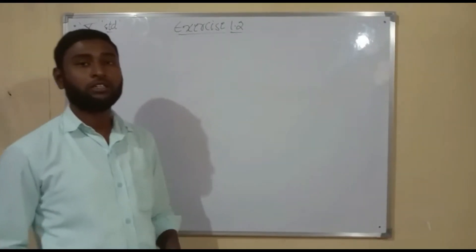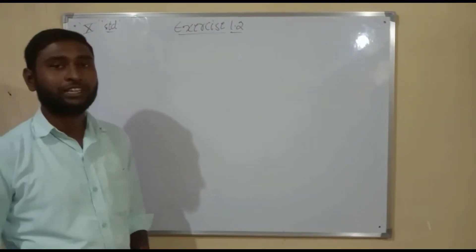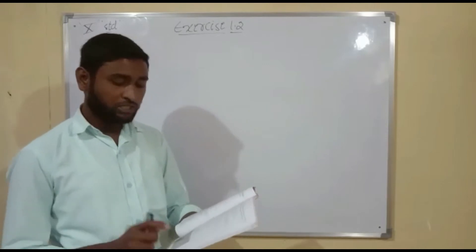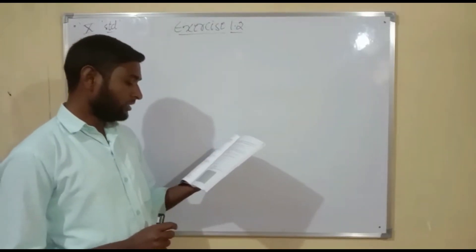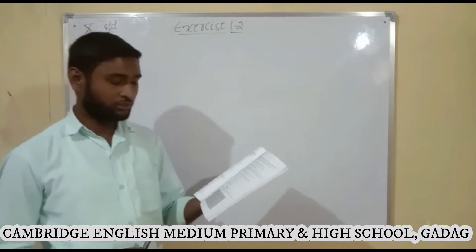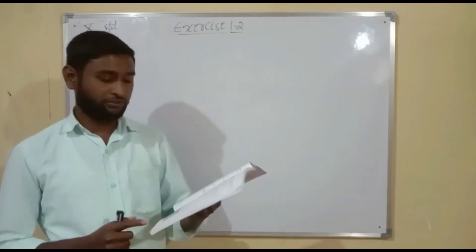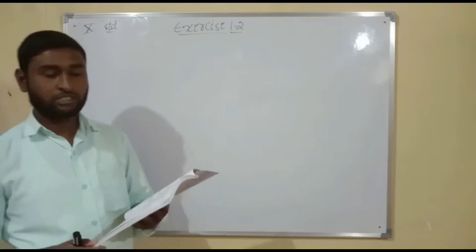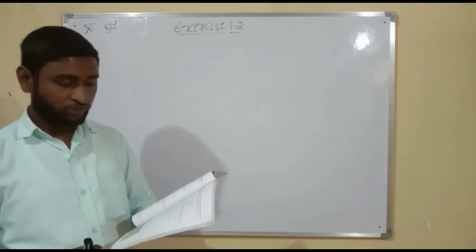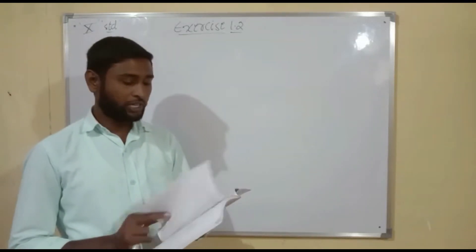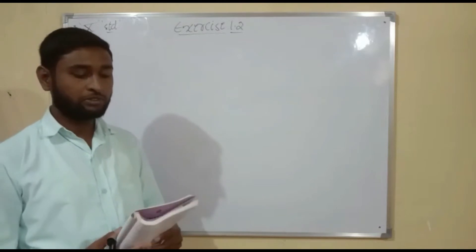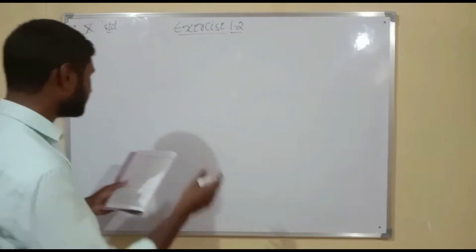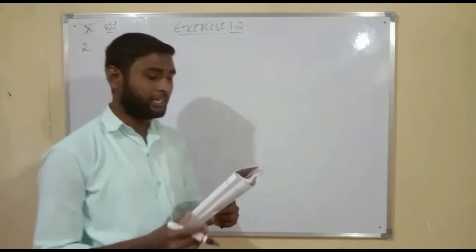Good morning students. In the previous class we discussed how to find out the nth term. In this class we are going to do Exercise 1.2. A box is given with three terms, and you will have to find out the fourth one. In some problems, the first term, common difference, and n are given, and you will find out the nth term. There are four problems total, given as homework — they are very easy, you can try at home. Now let us go for the second part.